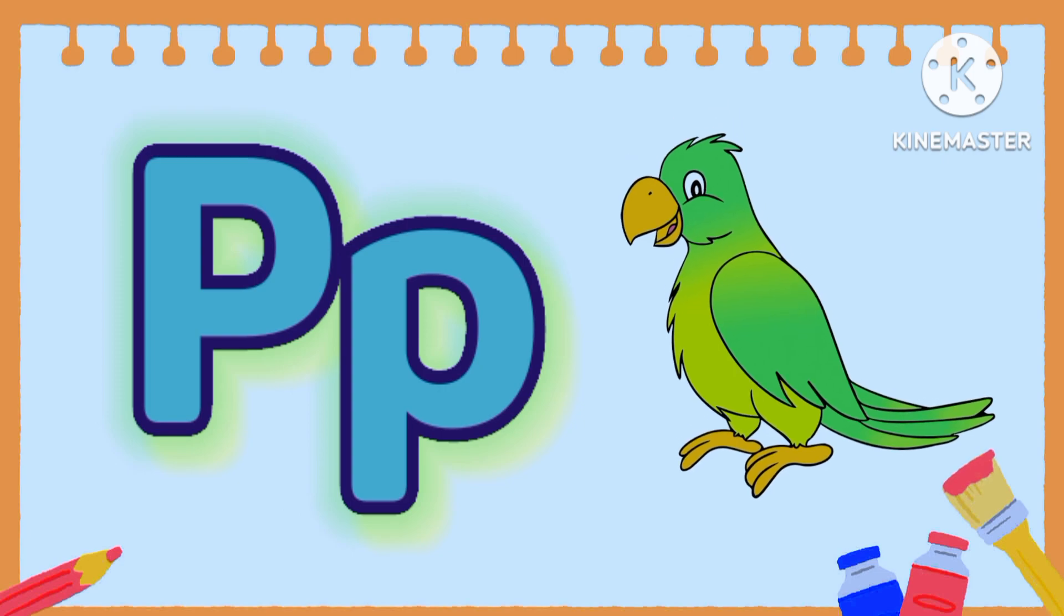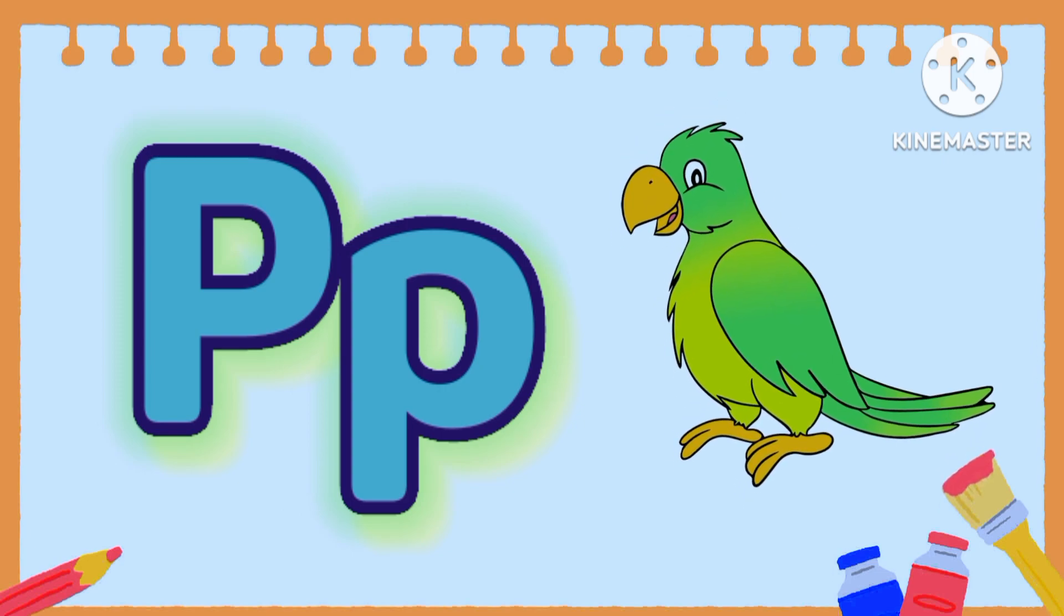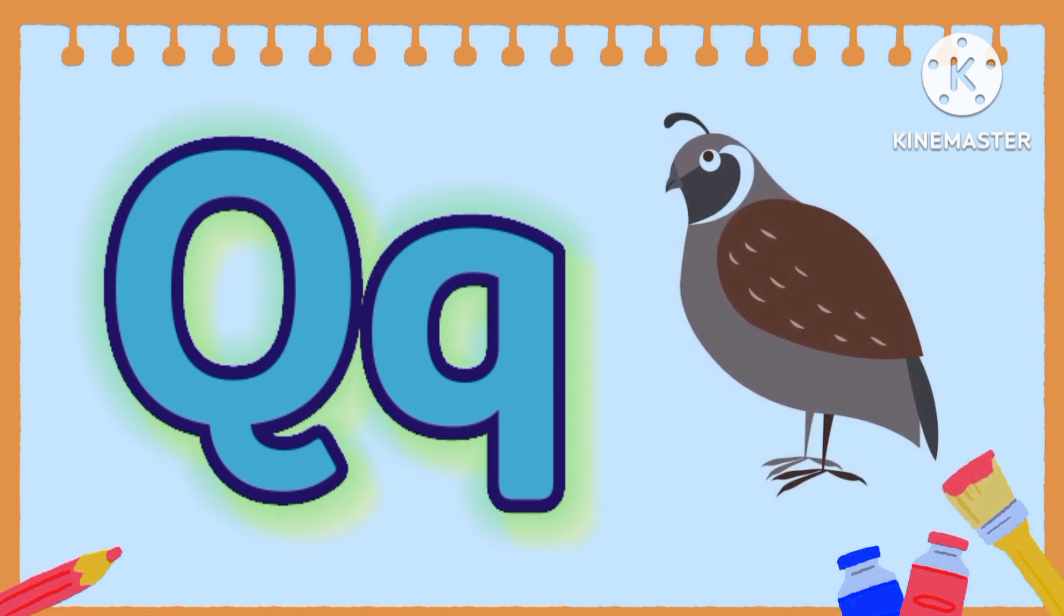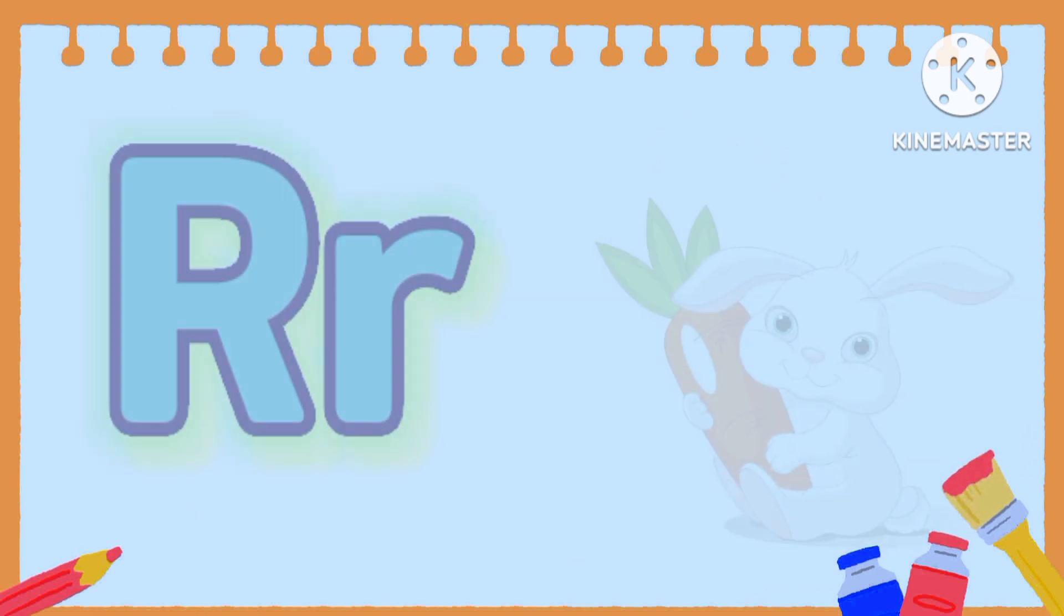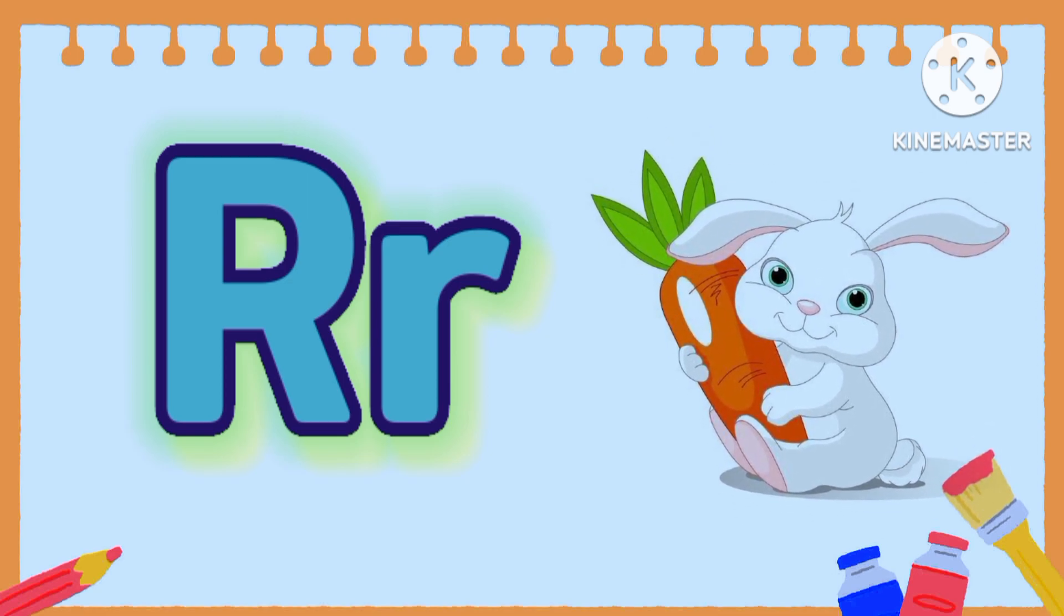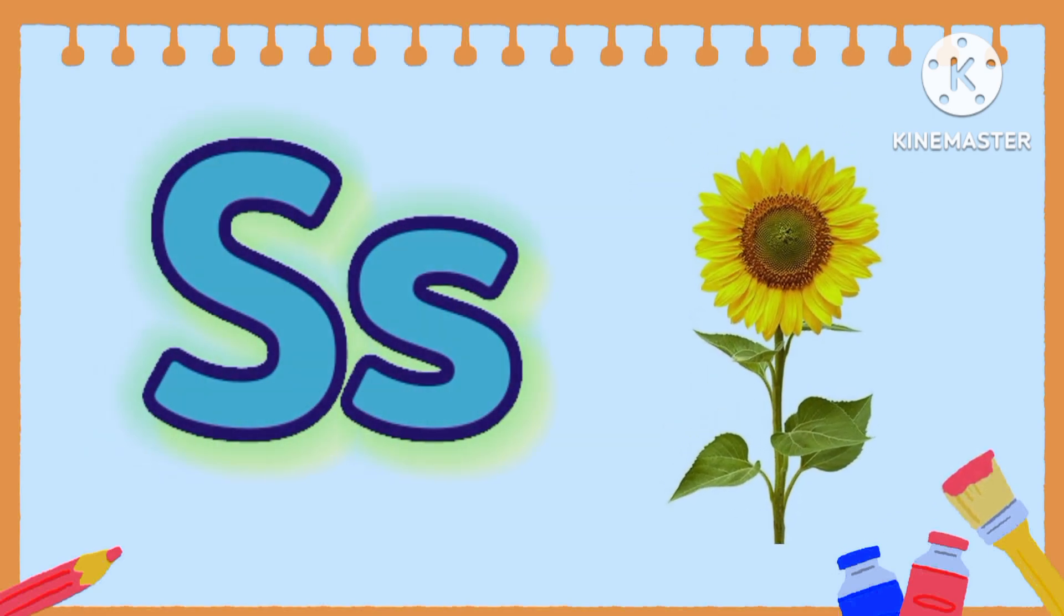P is for Parrot. Q is for Crab. R is for Rabbit. S is for Sunflower.